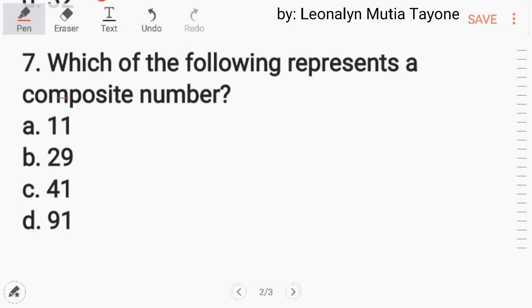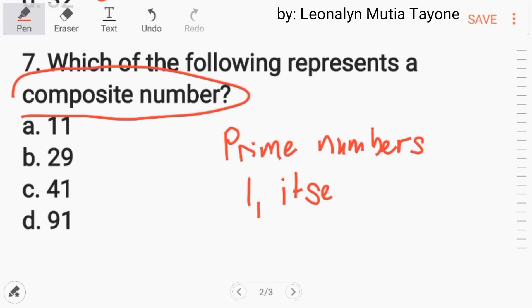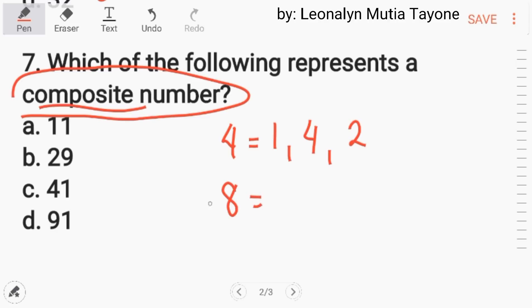Number 7. Which of the following represents a composite number? Pag sinabing composite number, more than 2 ang factors niya. Yung isa ay kilalanin muna natin si prime numbers. Itong prime numbers, ang mga factors niya ay 1 lang at saka itself, yung number lang mismo. While yung composite number, more than 2 ang mga factors niya. Example, 4. Ang 4, maliban sa 1 at saka 4 na factors, mayroon din siyang 2. 2 times 2 equals 4. Another example, yung 8. Aside from 1 at saka 8 na factors, mayroon din siyang factors na 2 at saka 4. So more than 2 ang mga factors niya. Ito yung mga example ng composite number.